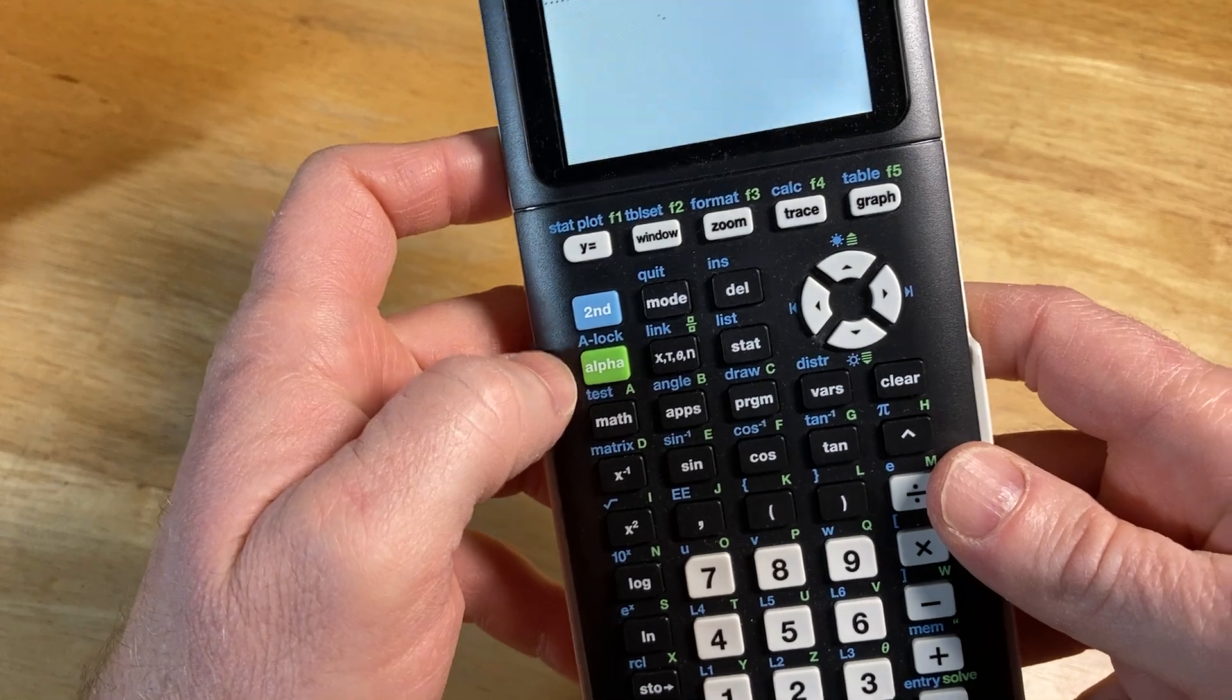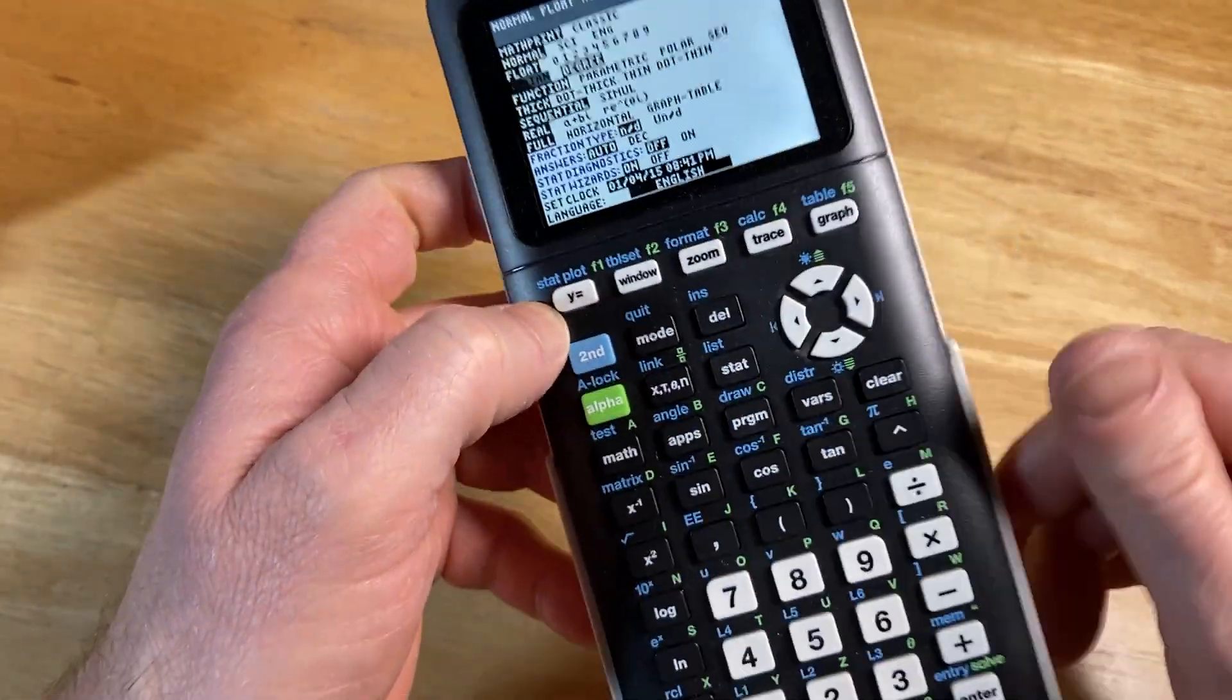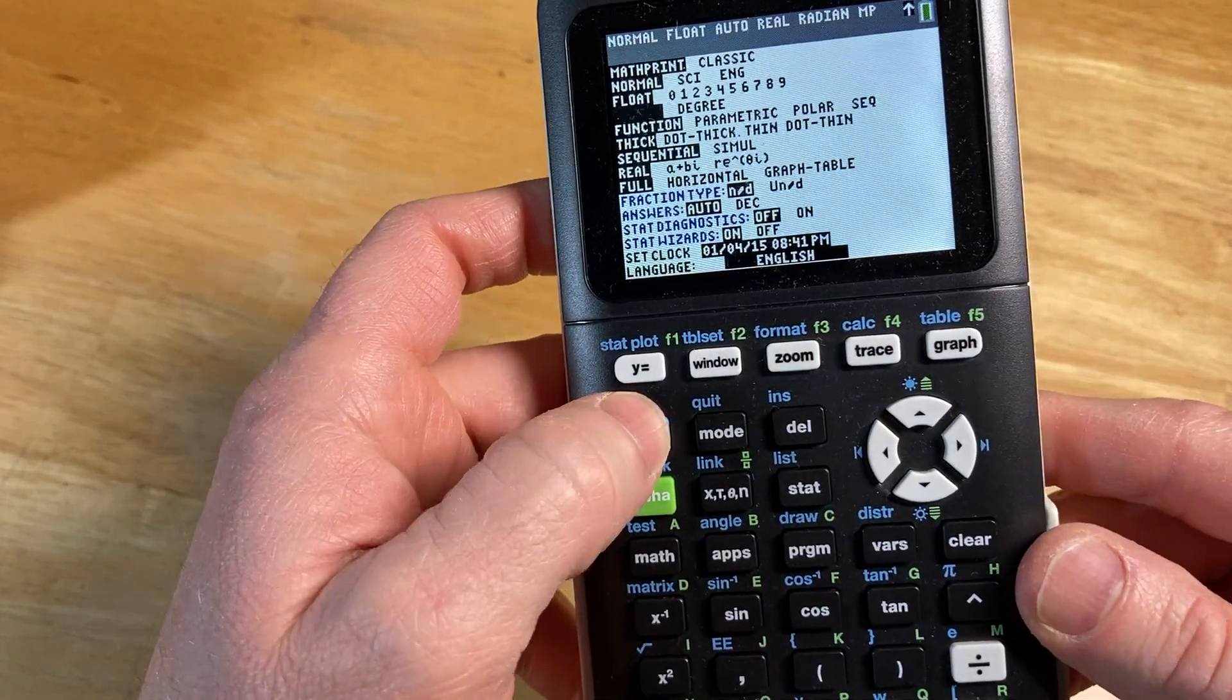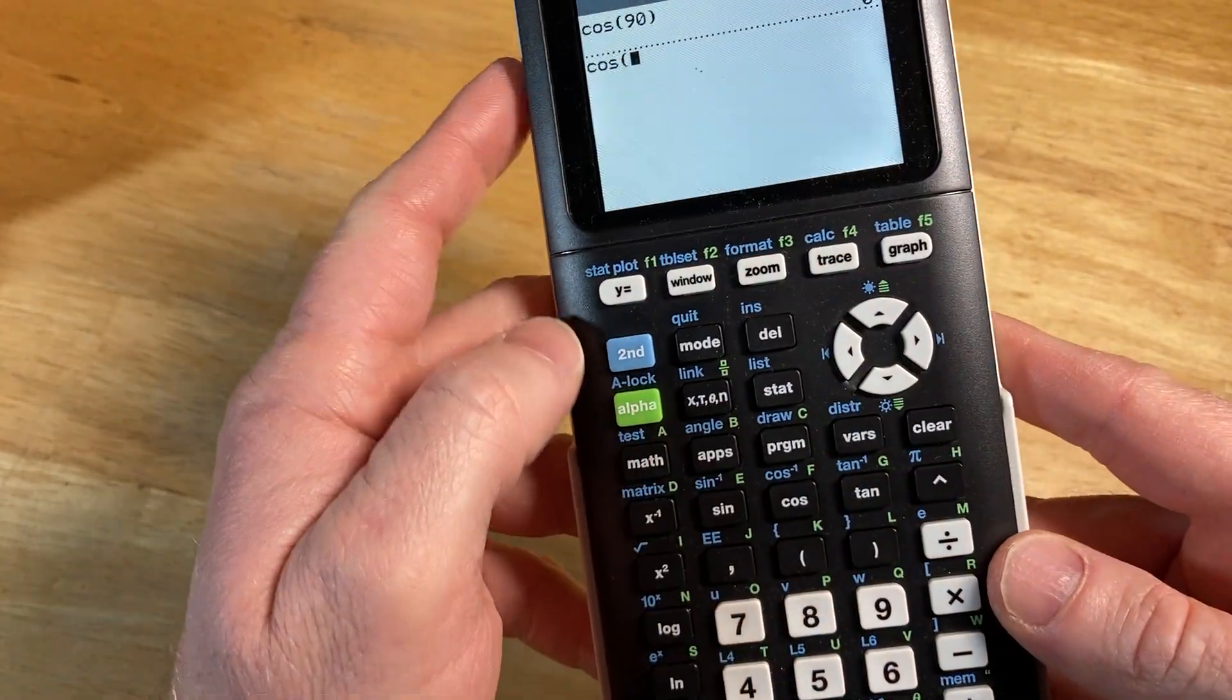Now let's go back to radian mode and press enter, and then again second quit. Now let's do the cosine of pi over two. We should get the same answer.